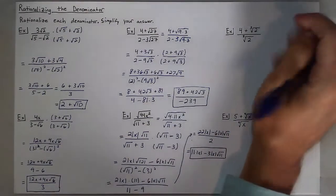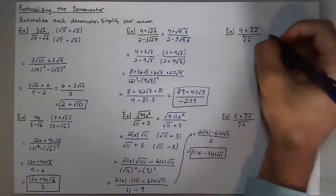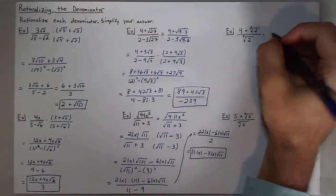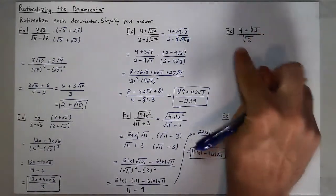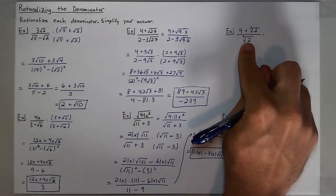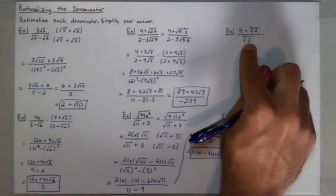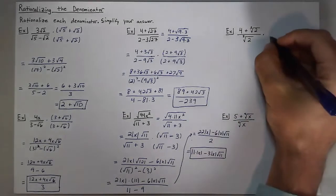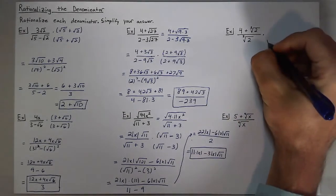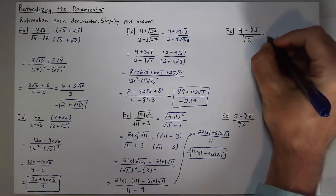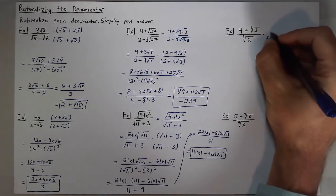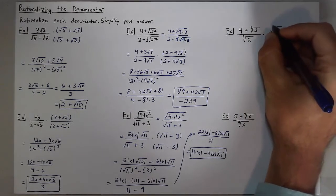To rationalize a cube root, you need to make a perfect cube within the cubed root. Right now, 2 is not a perfect cube, but if I multiply by the cube root of 2 squared in my numerator and denominator, I can create one.